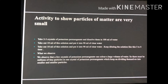The next characteristic is that the particles of matter are extremely small in size. To understand this, take 2–3 crystals of potassium permanganate and dissolve them in 100 ml of water. Mark this beaker A. Now take out approximately 10 ml of this solution and put it into 90 ml of clear water and mark this beaker as B. Keep diluting the solution like this 5 to 8 times.